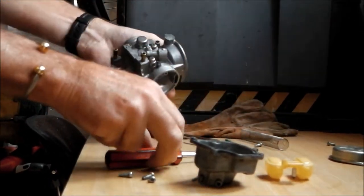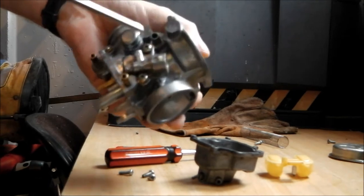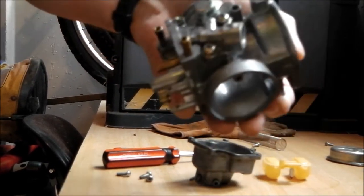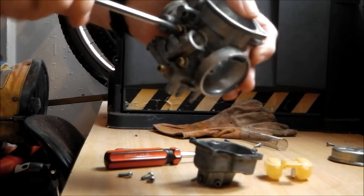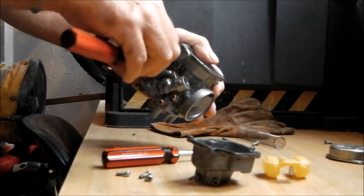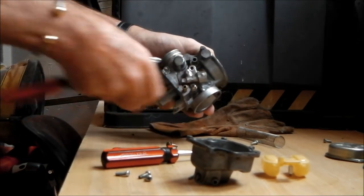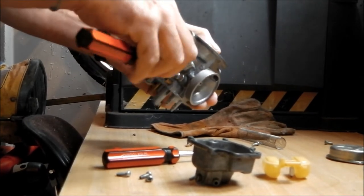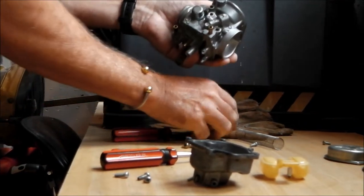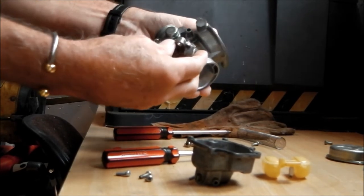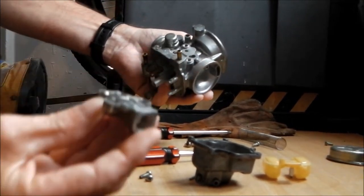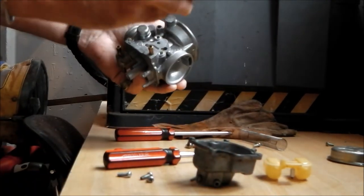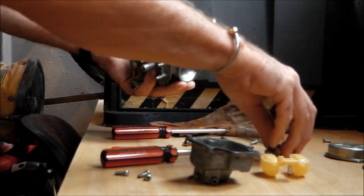Next thing is to remove where the choke goes. Choke's there. You've already removed that, the slider, when you took the carb off. Remove that. Two screws. Again really, you should get a nice new gasket for this. Because there's a gasket behind here. There's a gasket. So you should get a new one. But that's up to you.